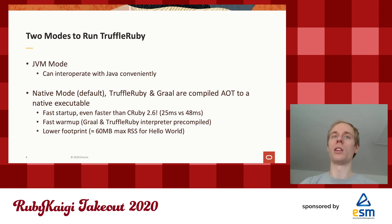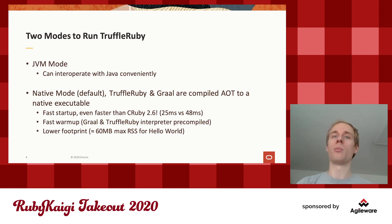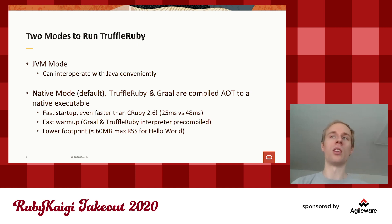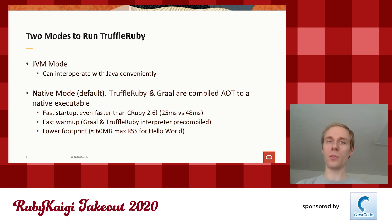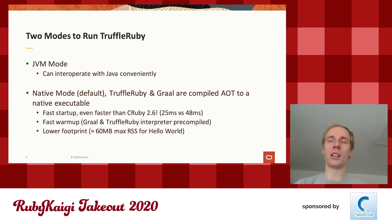There are two ways you can run TruffleRuby — two VM modes. You can run on the GraalVM, where the main advantage is you can interoperate with Java conveniently. Or you can run in native mode, which is the default, where the TruffleRuby interpreter and the Graal compiler are compiled ahead of time to a native executable. The end result is a bit like MRI — you have one executable with everything in it — and this provides faster startup, faster warm-up, and lower memory footprint.